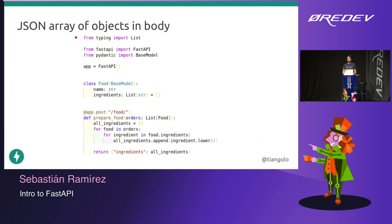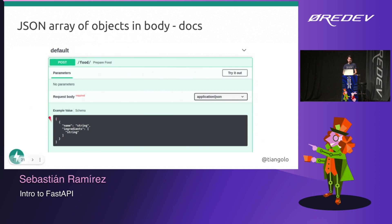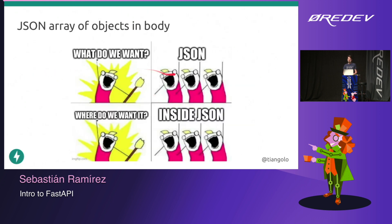Now let's say we want to receive a JSON array of objects in the body — a Python list of dictionaries or a JSON array of JSON objects. You just use standard type annotations: we say we're going to receive a list of instances of class Food. The orders parameter has this type, so we can iterate for each food item in those orders and for each ingredient and do a bunch of stuff. In the docs the information is updated automatically — it's now a JSON array because you can see the square brackets outside. FastAPI will make sure that's what we receive. You can define very complex nested data structures and just use standard type annotations; everything will be properly documented, validated, and serialized.